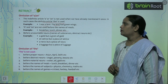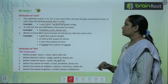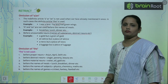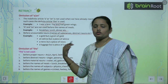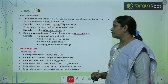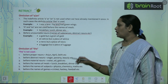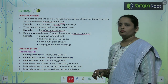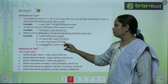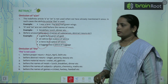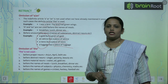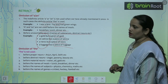A and An are also not used before countable nouns used as names of substances or abstract nouns, and not before uncountable nouns. For example, we don't say 'a gold,' but we say 'a gram of gold.' Not 'an advice,' but 'a piece of advice.' Not 'a news,' but 'a piece of news.' Not 'a luggage,' but 'a piece of luggage.'